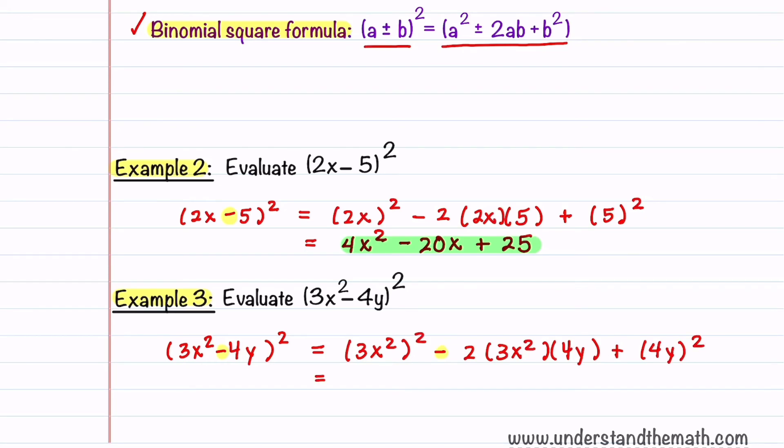This gives us a final answer of 9x⁴, and then we have 2 times 3 times 4, which is 24. So we have minus 24x²y + 16y².